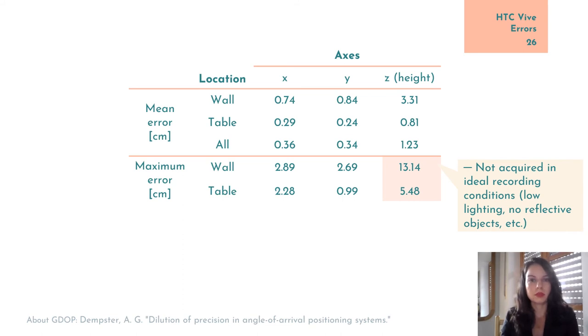This can happen due to bad lighting or the bad placement of base stations, for instance. Even though these large errors don't appear frequently, they can still be damaging when, for instance, we acquire the location of the anchors using the HTC Vive. In that situation, such a large error will propagate itself through the localization algorithm of the ultrawideband system, leading to significant ultrawideband errors.